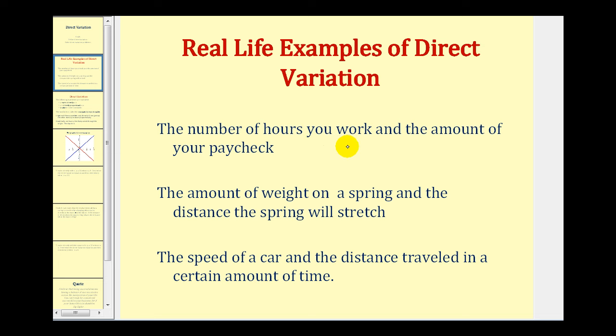For example, the number of hours you work and the amount of your paycheck is an example of direct variation. For example, if you make $12 an hour, the amount of your paycheck, P, would be equal to $12 times the number of hours, H, that you work per pay period. So for every hour you work, your paycheck increases by $12. This is an example of direct variation.